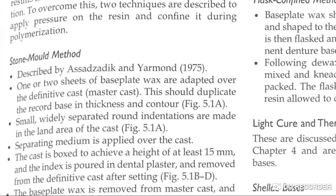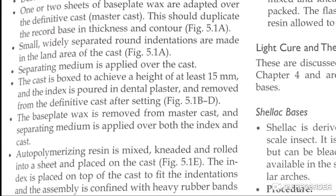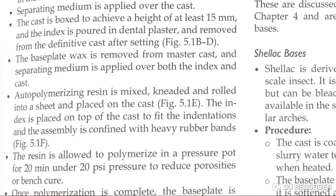In the stone mold method, one or two sheets of base plate wax are adapted on the definitive cast to duplicate the thickness of the record base and contour. Small, widely separated round indentations are made in the land areas. Separating media is applied on the cast. The cast is boxed to achieve a height of at least 15 mm. The index is poured into dental plaster and removed from the master cast. The base plate wax is then removed.